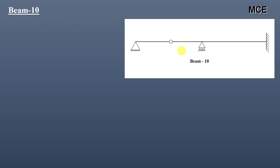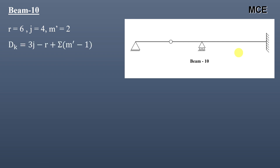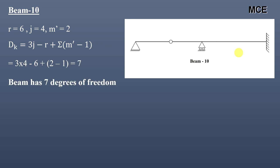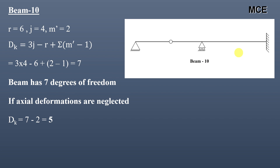Finally, for beam ten, there are six reactions, four joints: one, two, three, and four, and one internal hinge, so m′ = 2. The value of dk = 7, meaning the beam has seven degrees of freedom. This beam has two members, so if axial deformations are neglected, dk = 7 − 2 = 5. This is how we calculate the degree of kinematic indeterminacy of any beam.